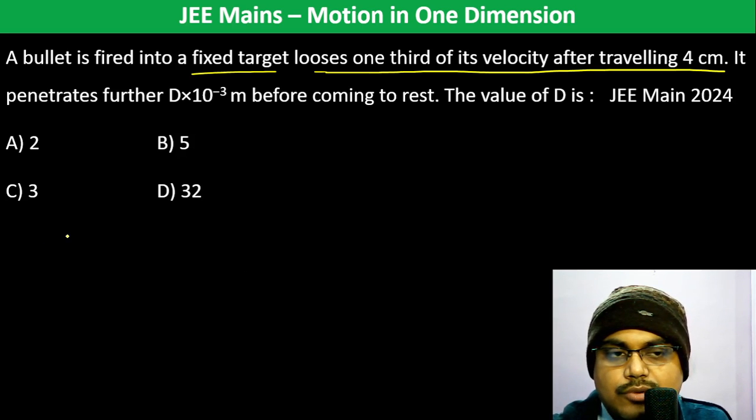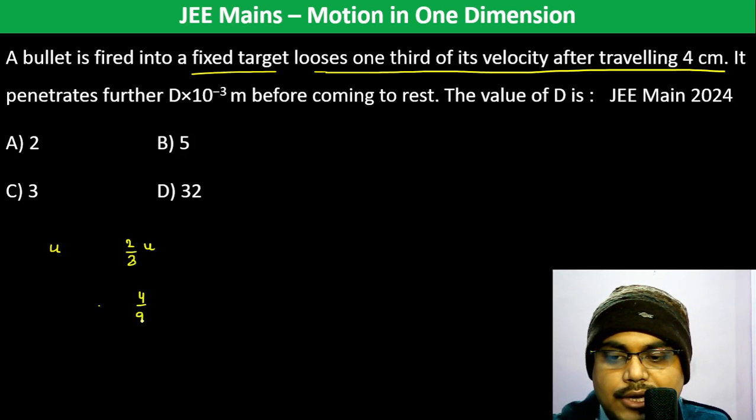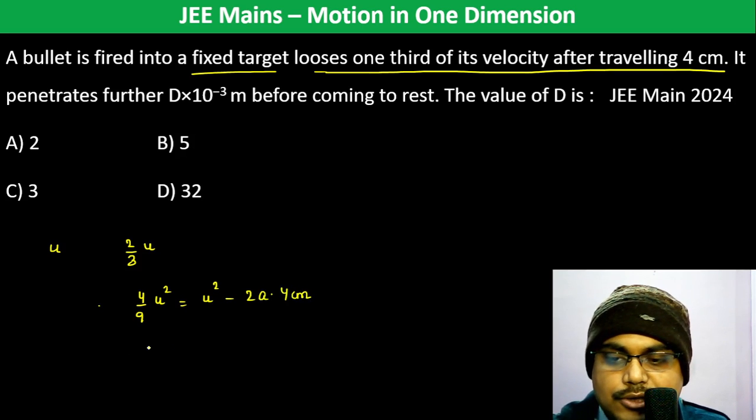V² initially, it loses one third so 2/3 is the final. So V² equals U² minus 2as. 4/9 U² is equal to U² minus 2 into a into s, where s is 4 centimeters.